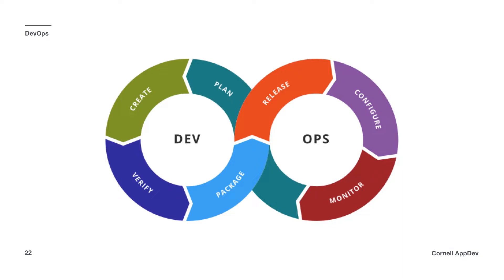A DevOps cycle graphic shows the left side — dev — covering planning, creating, verifying, and packaging. Planning is choosing Python and SQL; creating is writing lines of code; verifying is testing; and Docker handles packaging so the code is neat and orderly. Then on the operations side you release, configure, and monitor. This is a continuous cycle where you continually improve and iterate on your code as well as your development procedures.